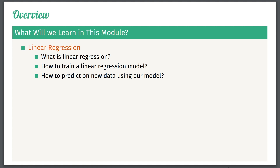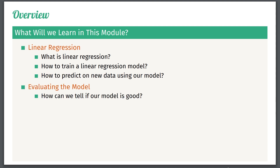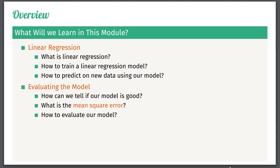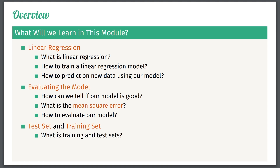This is going to be our first true machine learning model. In the next part we are going to discuss how to evaluate this model, which will essentially answer the question: is our model any good, or should we try another model? To do this we will introduce the so-called mean square error, which is going to measure the performance of our model. Finally, we are going to introduce the notion of test set and training set and explain what they actually are.